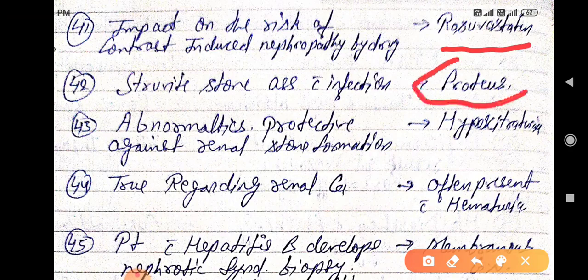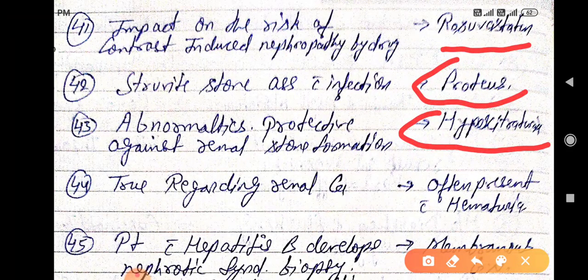Abnormality is protective against renal stone formation, that is hypercitraturia.